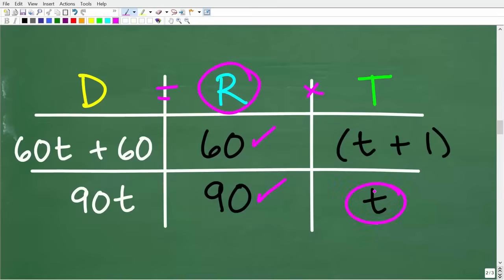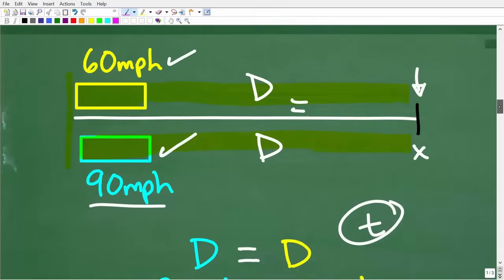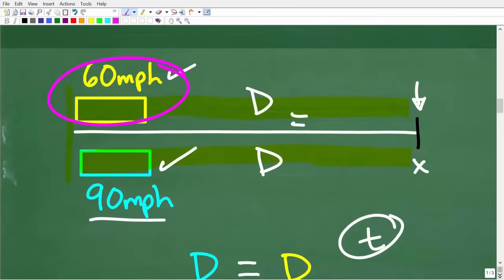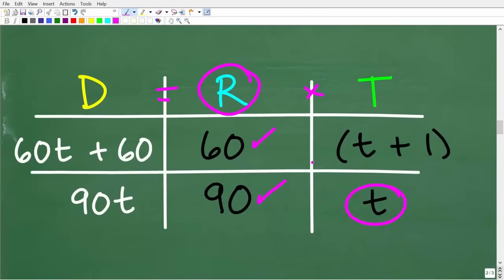So which train travel longer, okay? Which train has been on the track longer, if you will? Well, it's this train, right? So it's going to take T hours for this faster train to catch up to the slower train. So this slower train has been going this amount of time plus one hour because it has a one hour head start. So this is really critical. So the time the slower train has been traveling is T plus one.